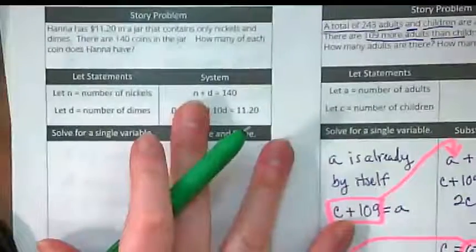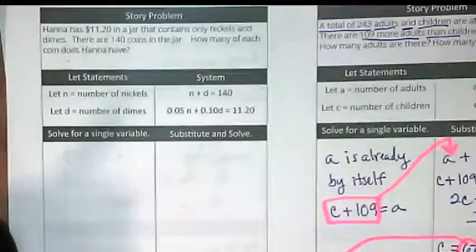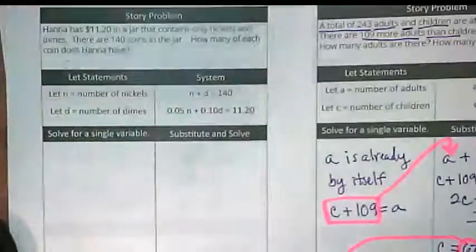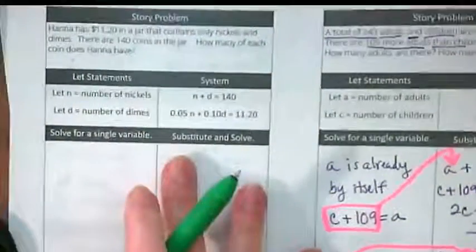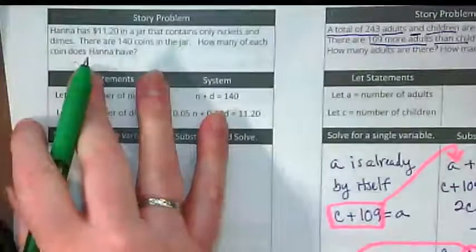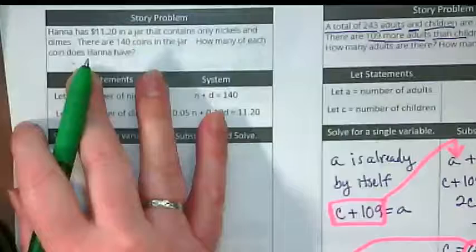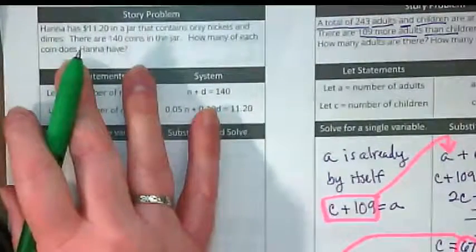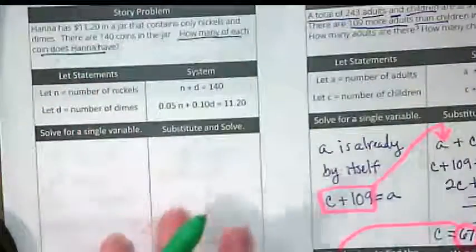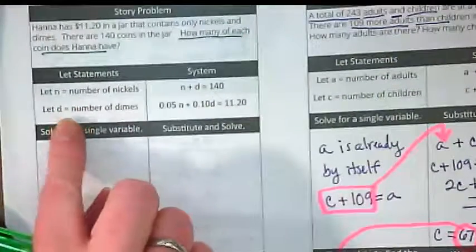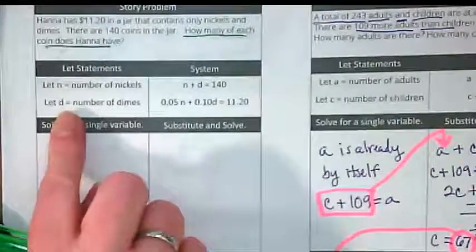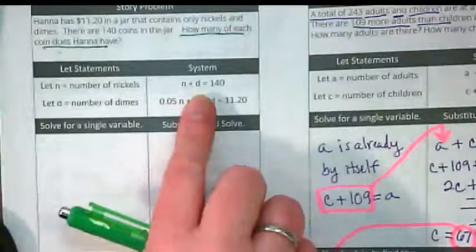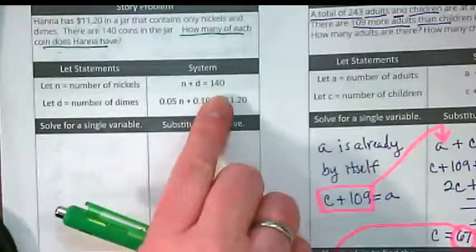All right, let's do the more challenging one, and then this is going to be the end for today. Why is this one more challenging? Because it has decimals, we have to multiply. The math just looks kind of ugly and messy, and I'm finding I have to write really tiny to get things fitting in these boxes. So this is very similar to the problem we did when we watched that video of the coin sorter last Thursday. Hannah has $11.20 in a jar that contains only nickels and dimes. There are 140 coins in the jar. How many of each coin does Hannah have? That's the question we're trying to answer.